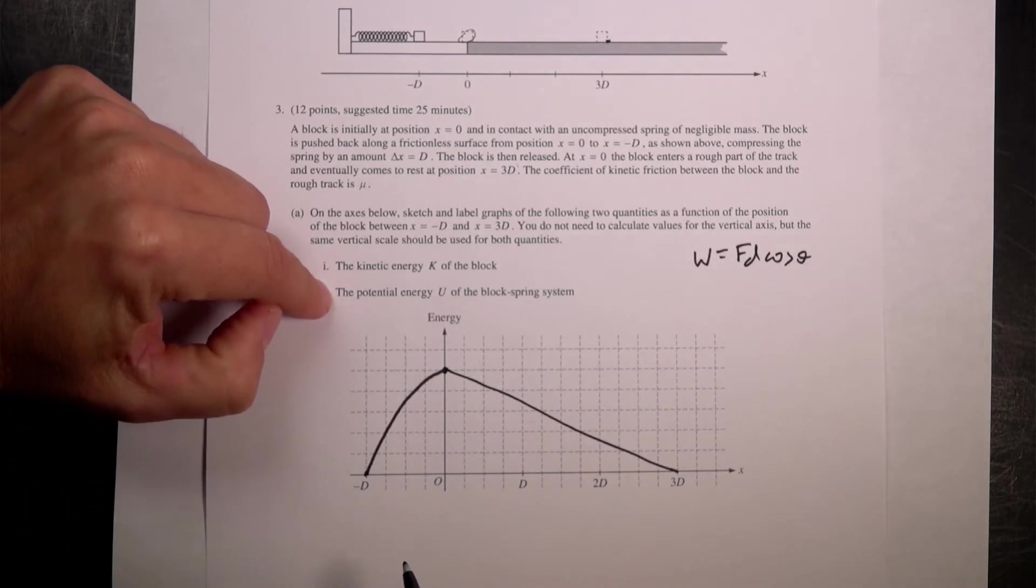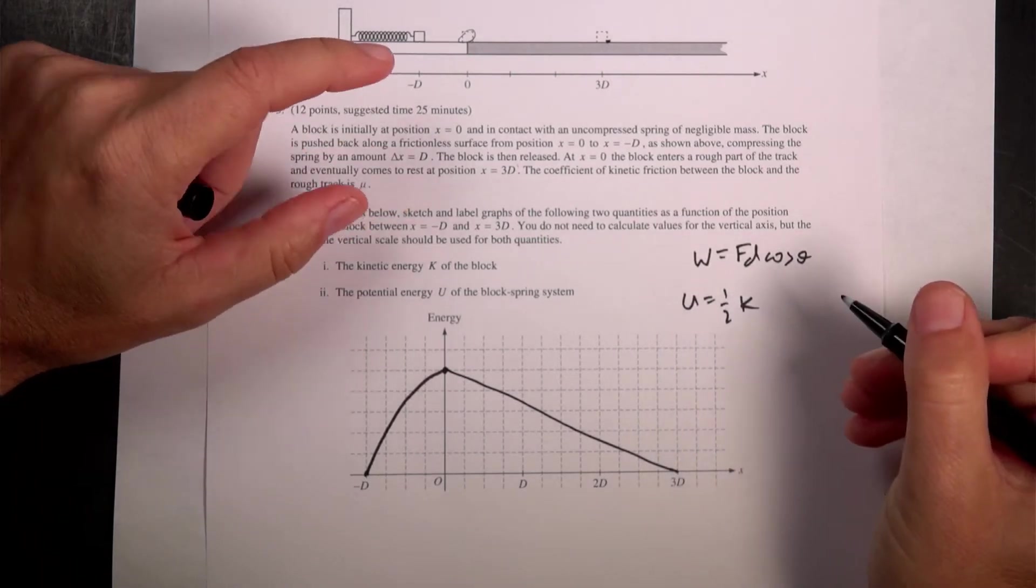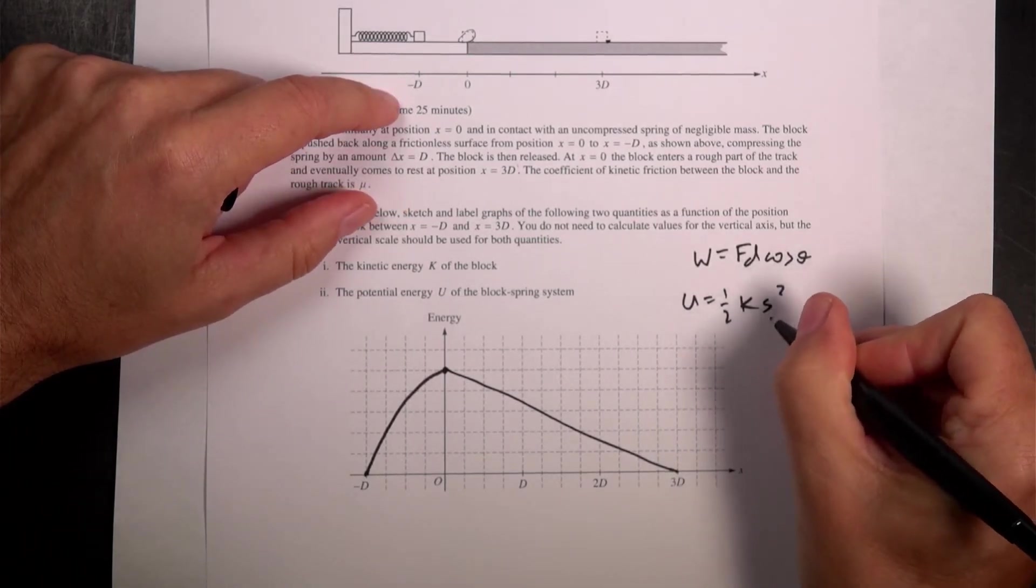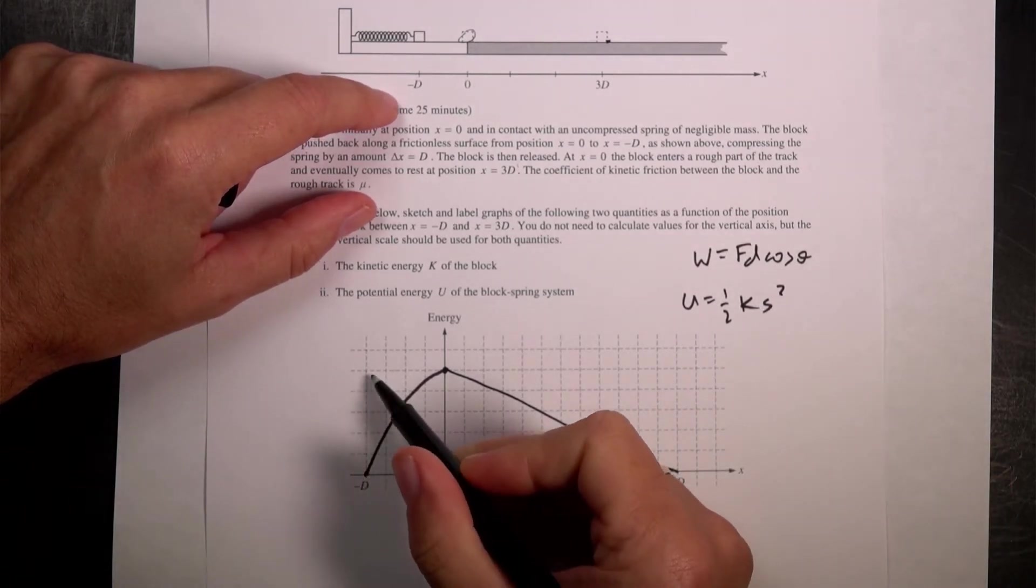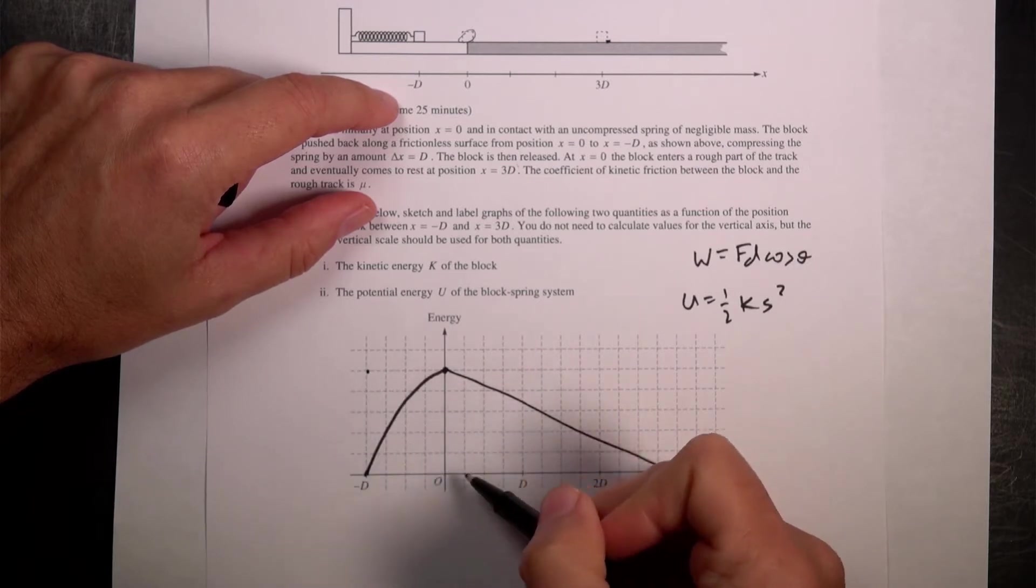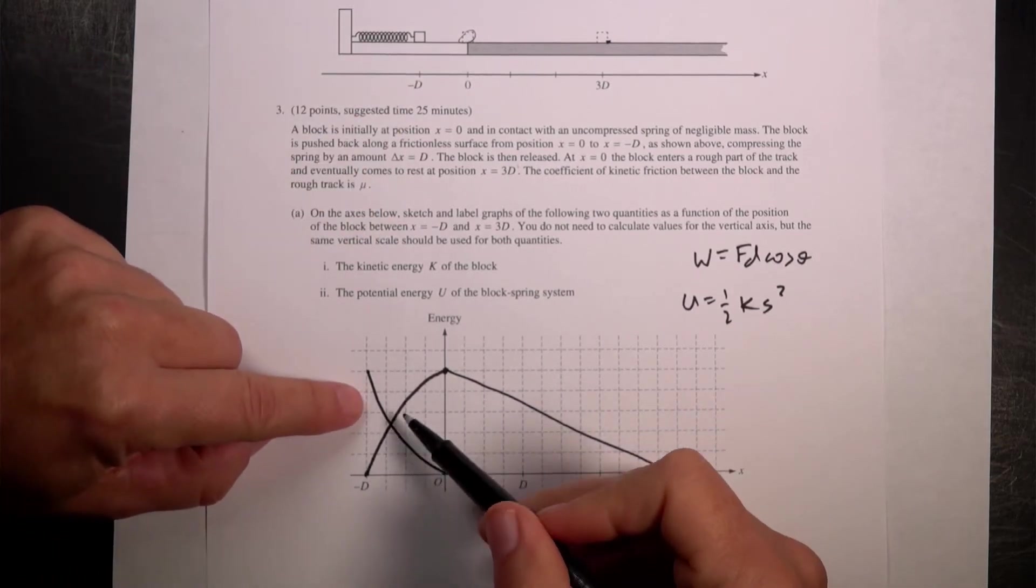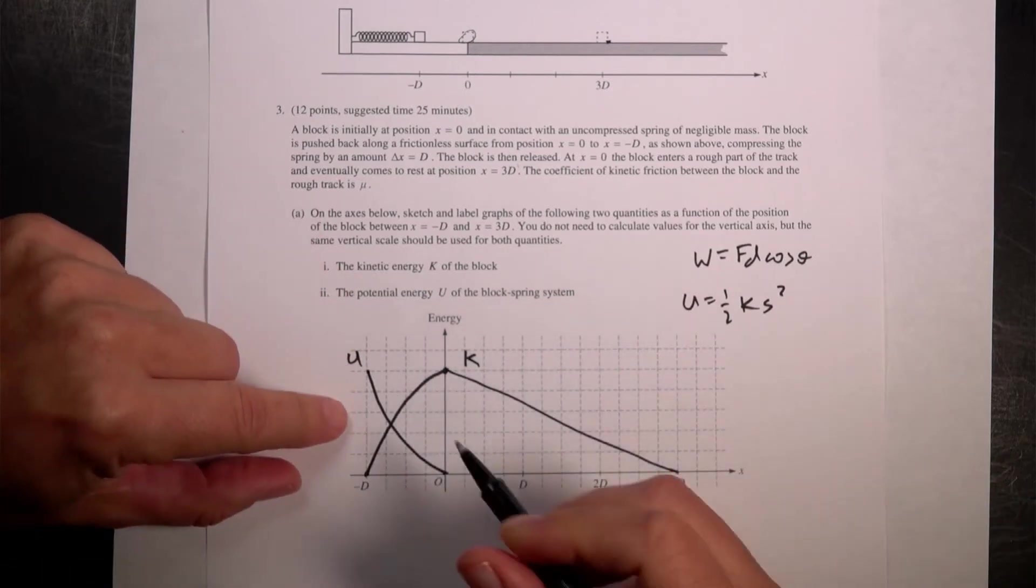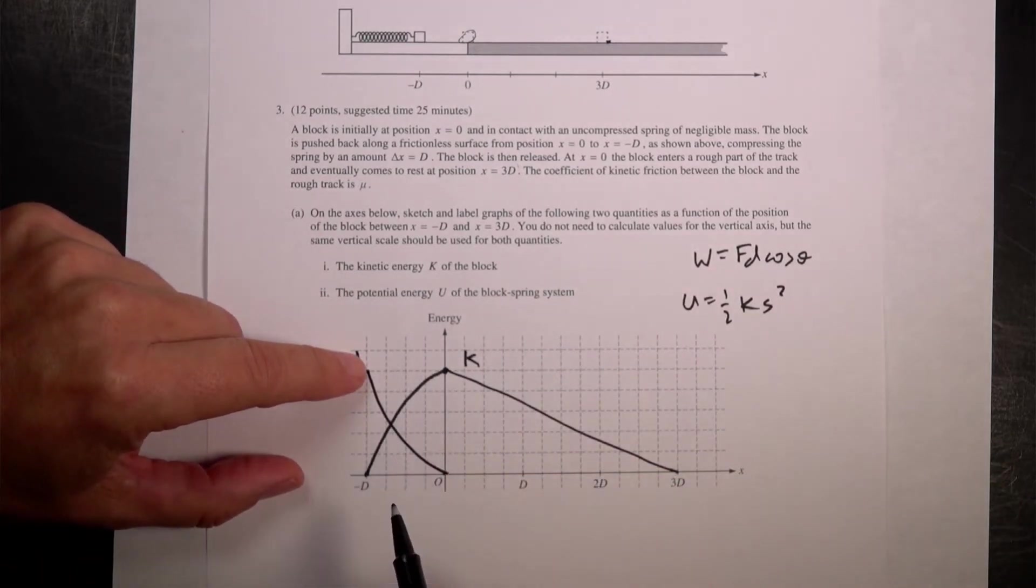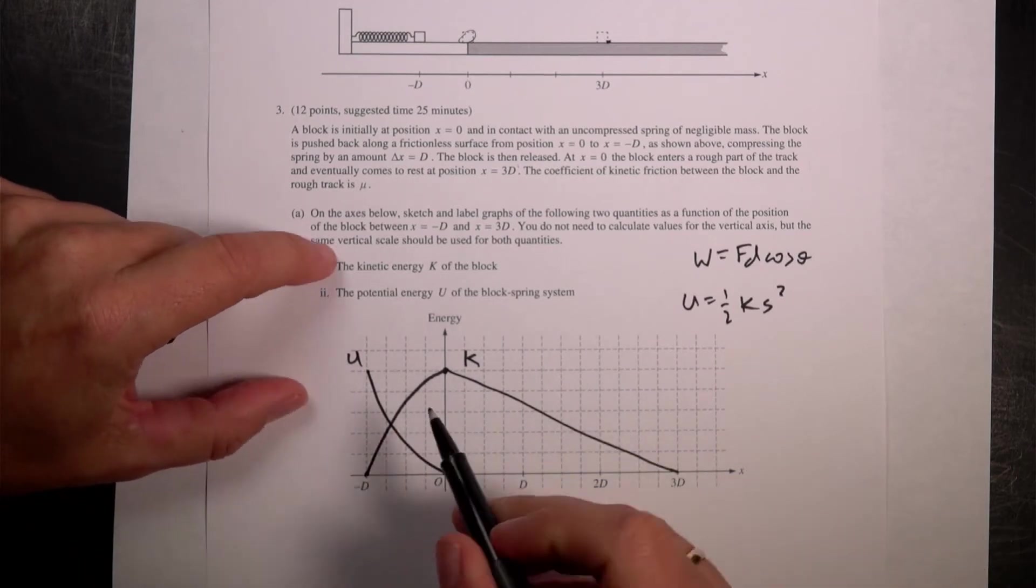The potential energy of the spring is U is one half k x squared. They call it, I call it s squared, s is the amount that's compressed. So this would mean that as a function of this, it should be a parabola like this. So it's maximum compression up here, zero compression down there. So it's like this. And I think if you add these two together, so this is U and this is K, if you add these two together you should get some constant amount. If you think of the spring and the mass as part of your system, there's no work done, it should be constant. I'm pretty happy with that.